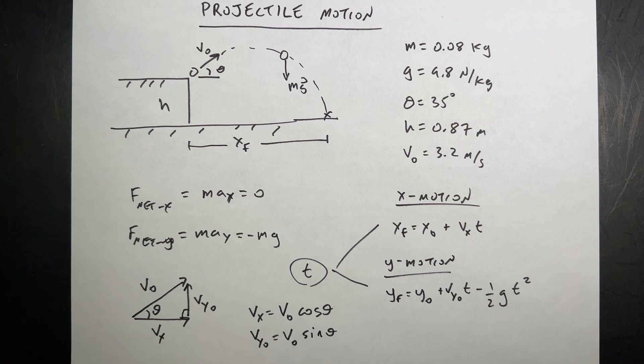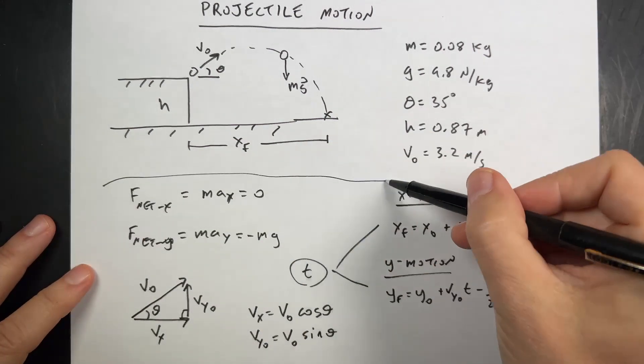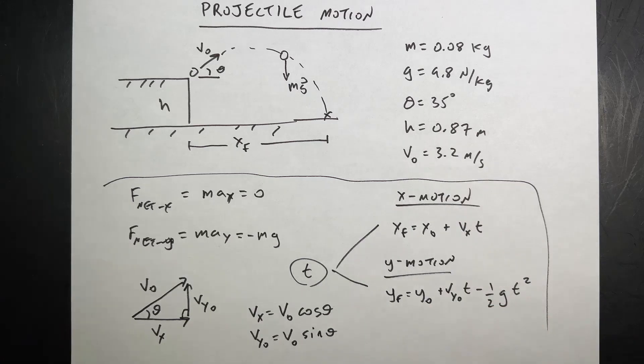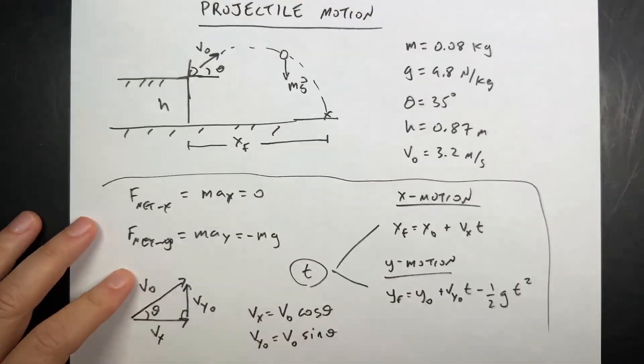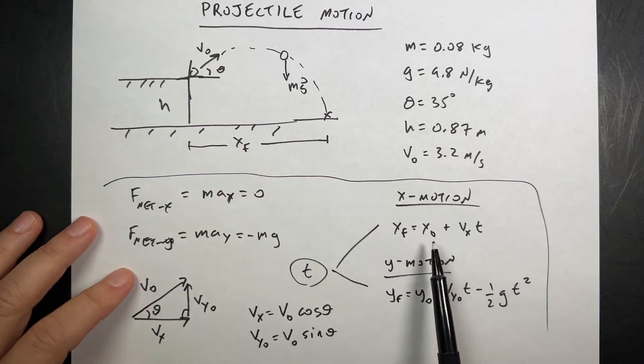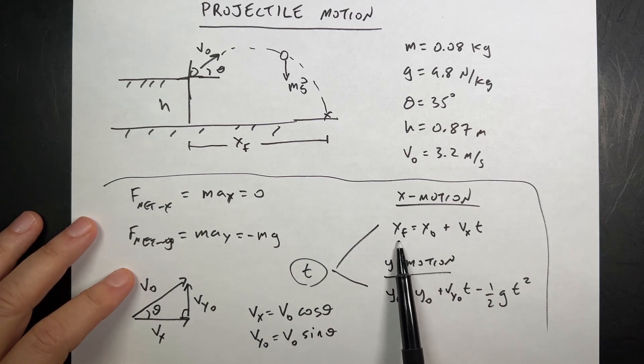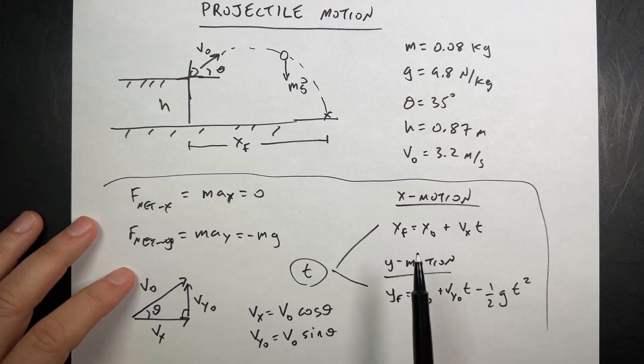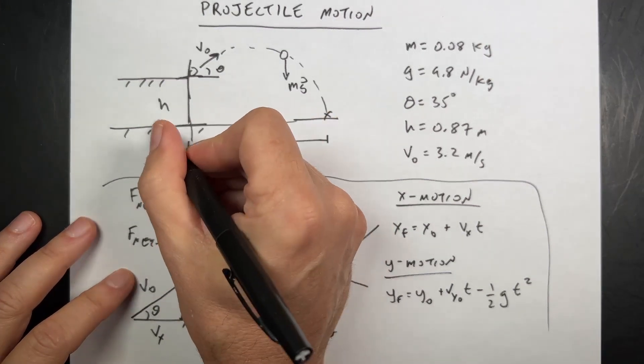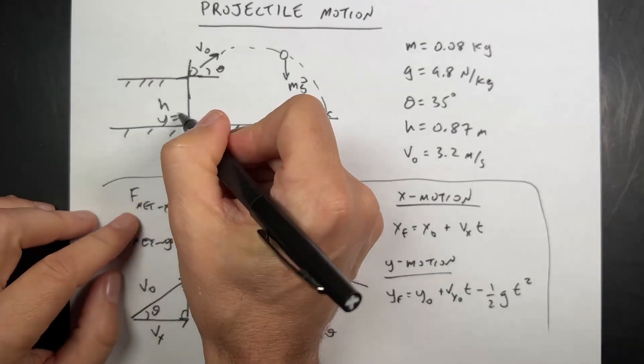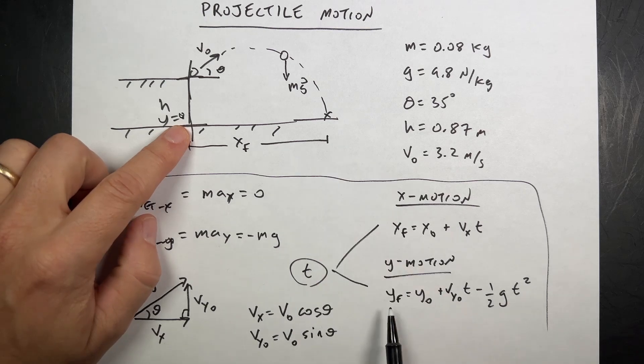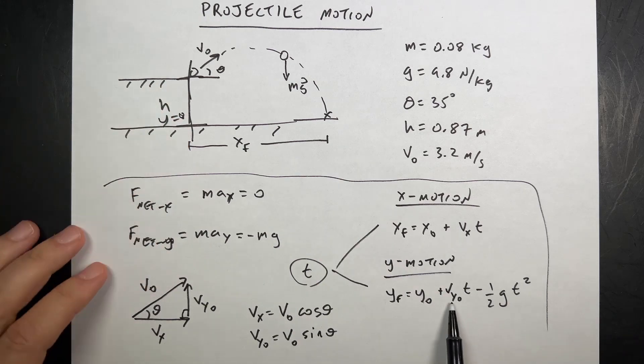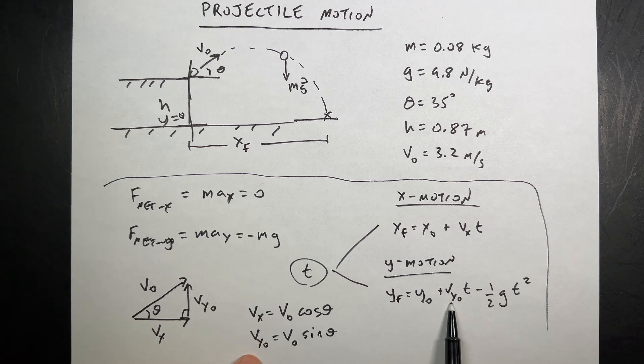So now we just need to use this generic, this is all generic projectile motion stuff for this particular problem. And you'll notice that in my x motion, if I pick this as my origin, I can pick wherever I want. I'm going to pick that as my origin. So that my initial x is zero. My final x, that's what I want to find. Now for my y motion, actually I'm going to put this as my origin. I'm sorry. I'm going to put y equals zero down here. I think that just makes more sense to most people. If that's the case, my final y is going to be at the ground. It's going to be zero. My initial y is going to be h. And I need to find my x velocity and my y velocity.